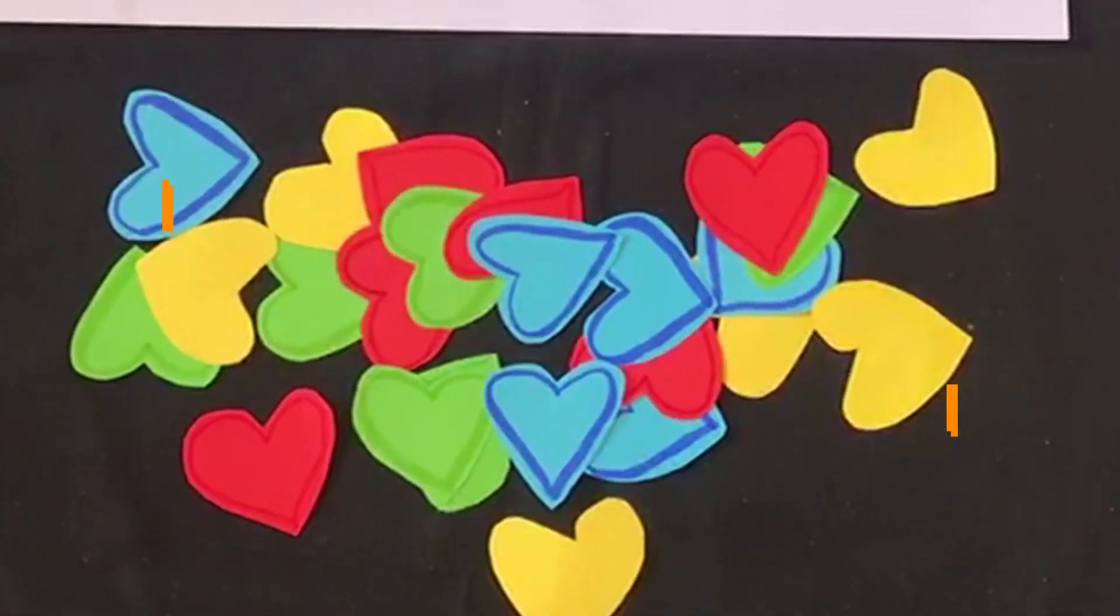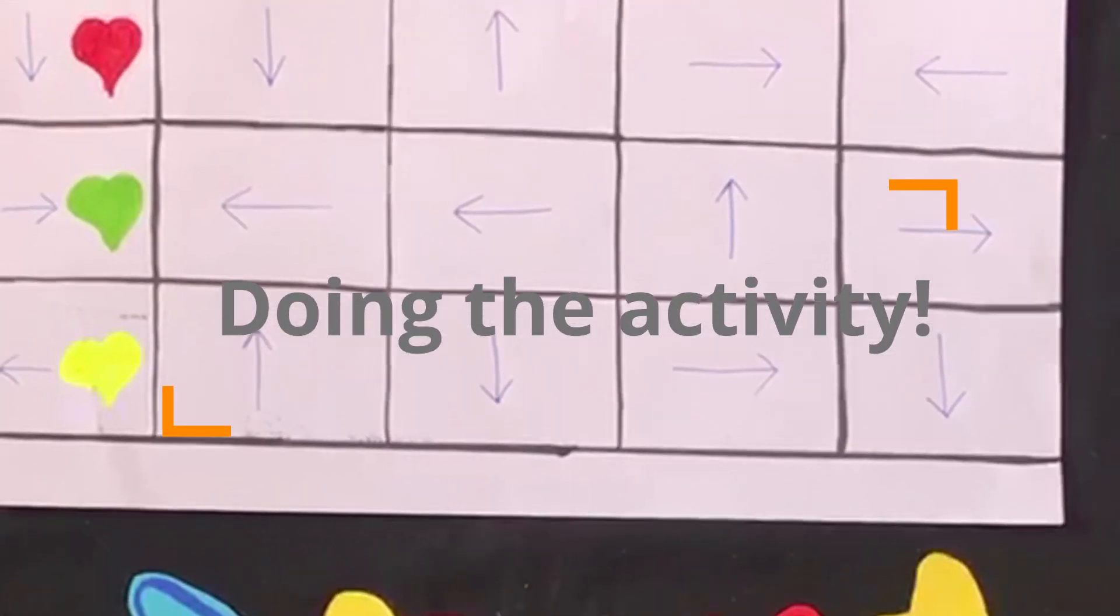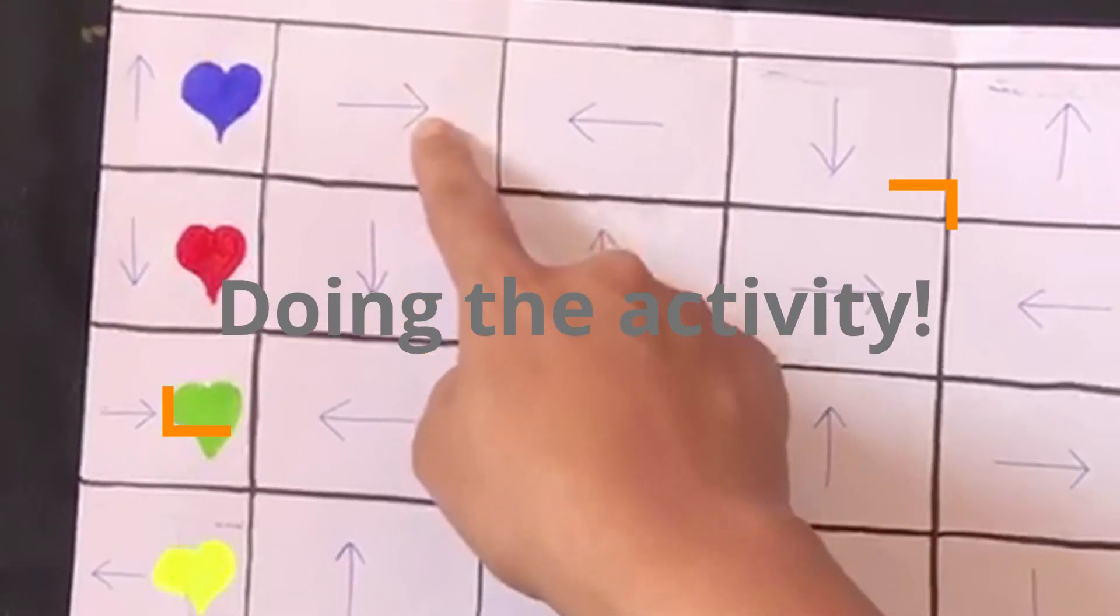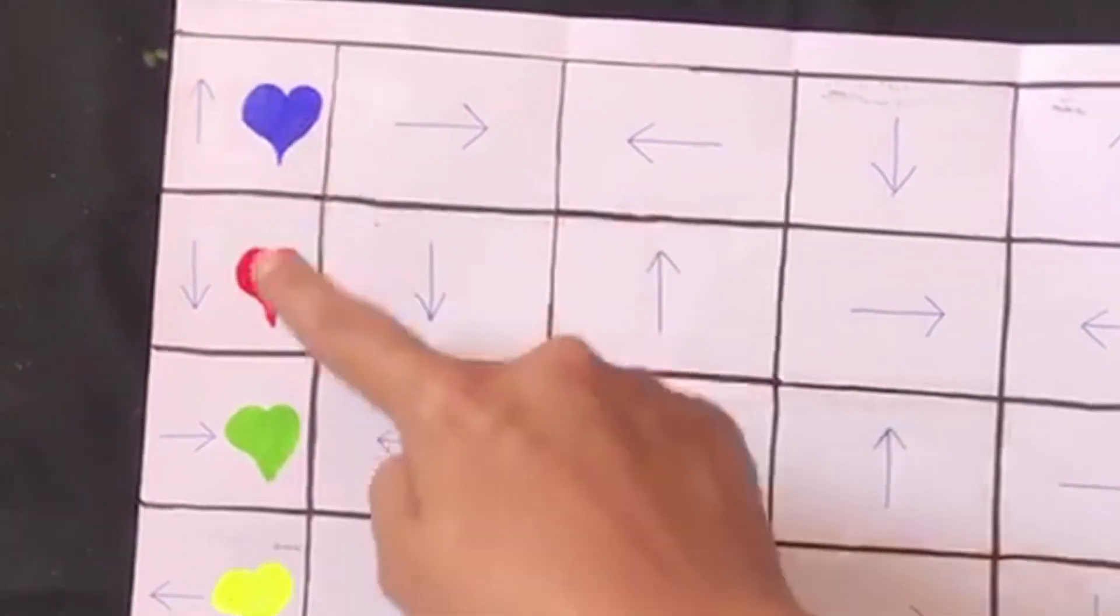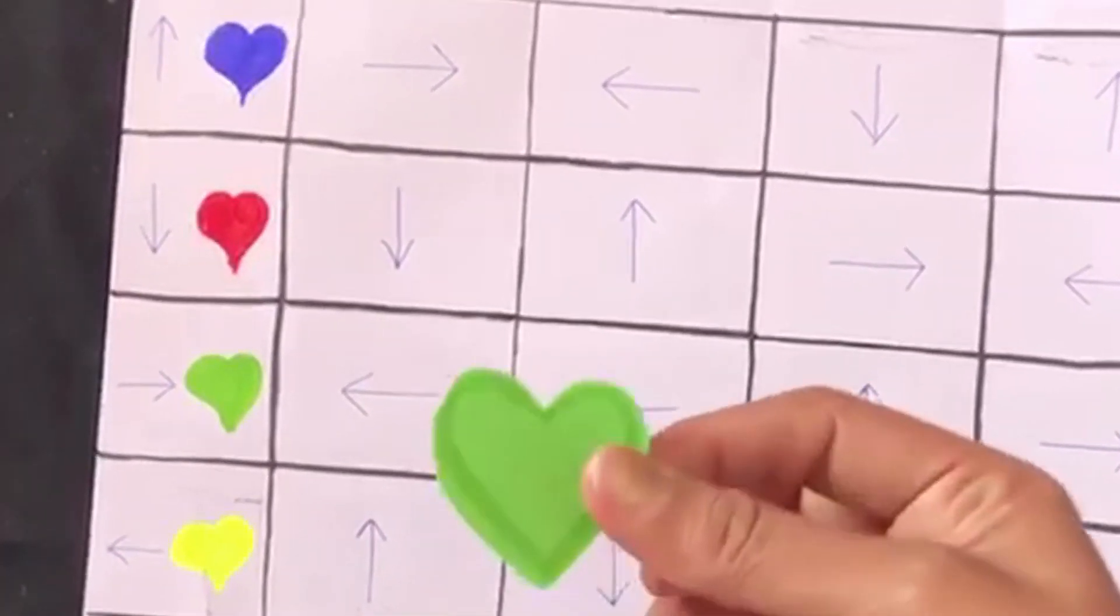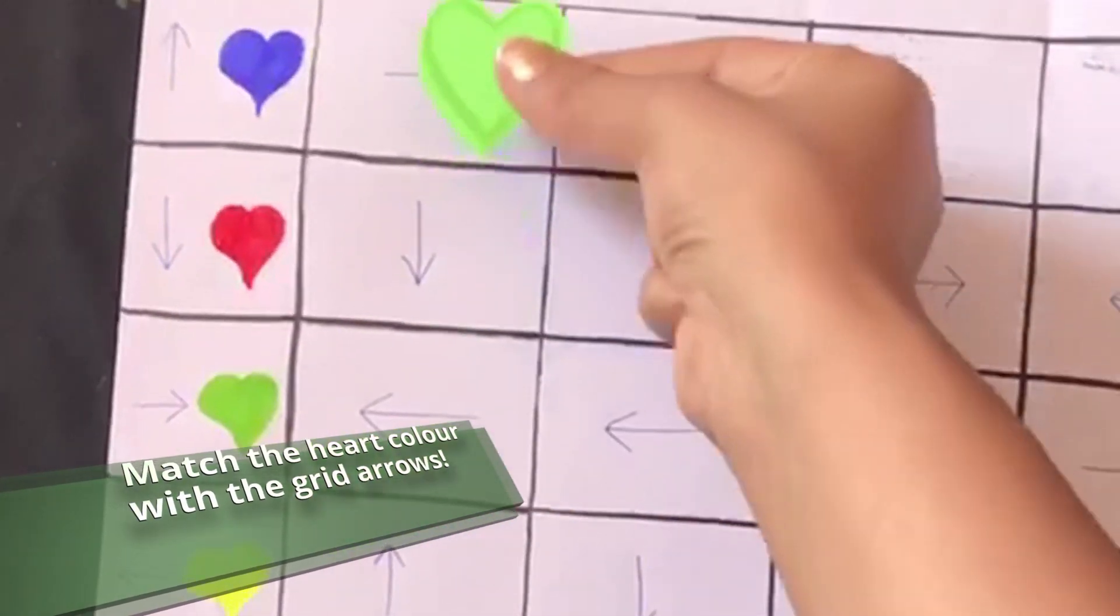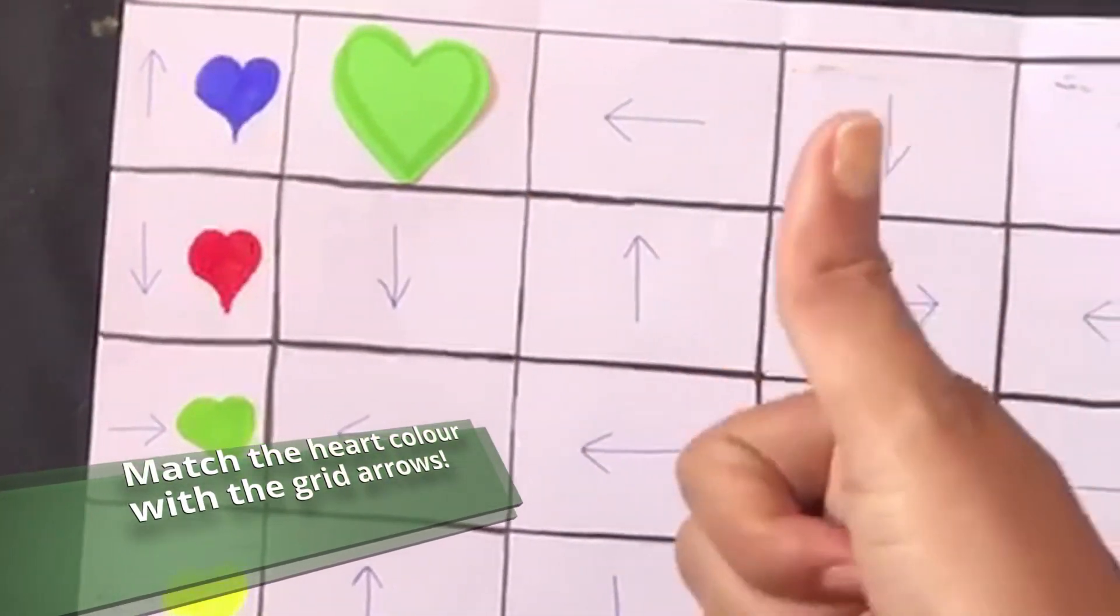And we are ready to go. What the activity is? Give your child the sheet and heart cutouts. Ask them to place the hearts on the grid according to the direction associated with it.